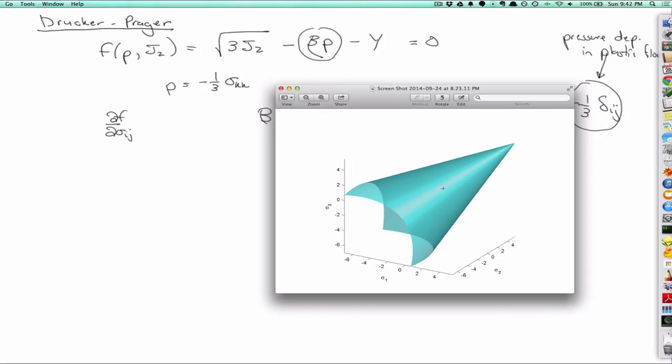But then with the pressure dependence, so in compression, the yield surface actually grows in diameter to some size. Any cross section through this is still a circle, though.